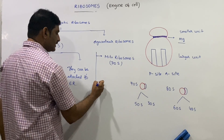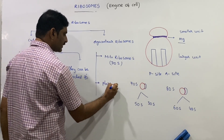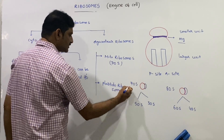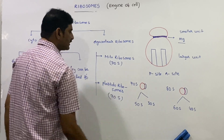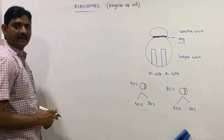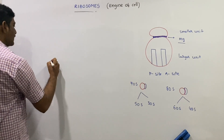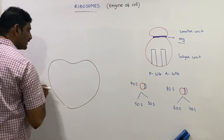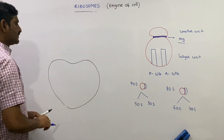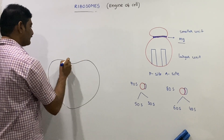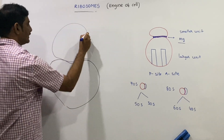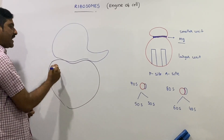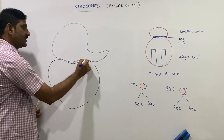Ribosomes in mitochondria are known as mitoribosomes; they are 70S. Ribosomes in chloroplasts are known as plastidoribosomes; they are also 70S. The larger subunit appears dome-shaped, while the smaller subunit is cap-like. These two subunits are held together by magnesium ions.